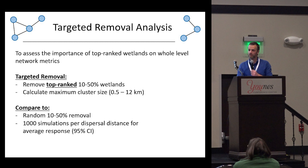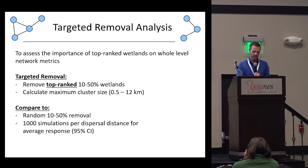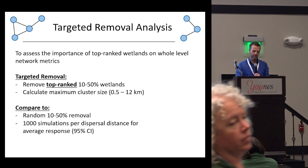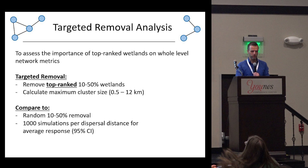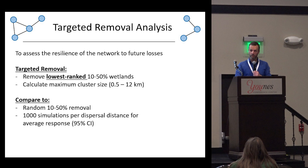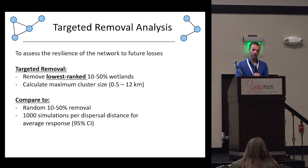After constructing these rankings, we wanted to see how important the top-ranked wetlands actually are for how the network functions. We did a targeted removal — taking out 10, 20, 30, 40, and 50% of the top-ranked wetlands — then calculated the maximum cluster size at each dispersal distance. We compared that to 1,000 random removal scenarios at each percentage level to get an average response and confidence intervals. On the flip side, we also did a targeted removal of the lowest-ranked wetlands to see how resilient the network is when losing those instead.